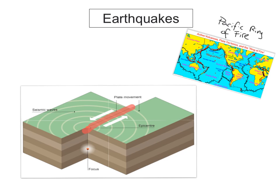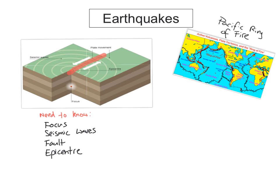The fault line is the thin zone of crust that separates the two sections of Earth's crust — it's where the plates are separated and actually slip. So to summarize, the four things you must know for your exam are: the focus, seismic waves or tremors, the fault line, and the epicenter.